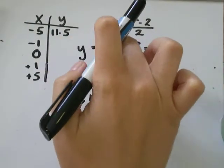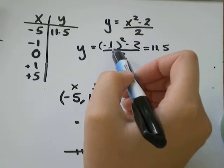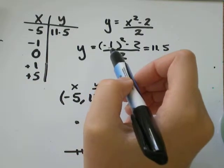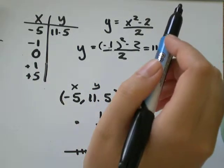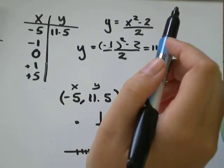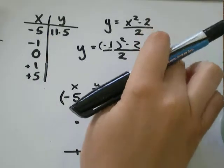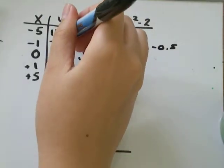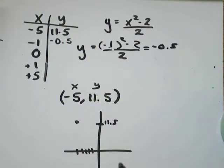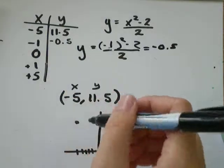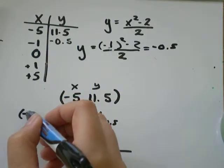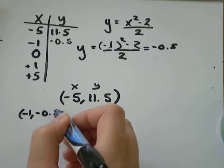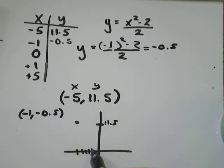Let's do the same thing with negative 1. Negative 1 squared would just be positive 1 minus 2 would be negative 1. Divided by 2 would be negative 0.5. So, that's another point on my graph. Would be negative 1, negative 0.5. So, I'll go negative 1 in the X direction and negative 1 half in the Y direction, somewhere around there, I guess.